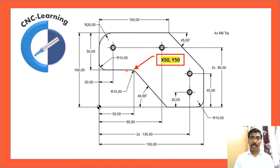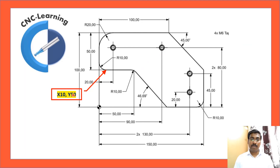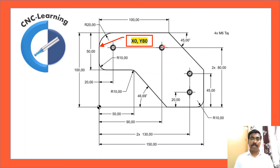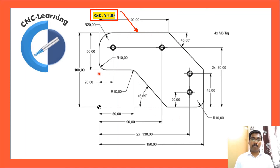Continuing with coordinates: X10, Y50 — the X-axis zero is 0, and the 10 mm radius gives X10, with Y already at 50. Then X0, Y60 — 10 mm extra beyond Y50 gives Y60. Next X0, Y80. Then X20, Y100. And X50, Y100, coming back to the original start point, completing a full round of the profile.